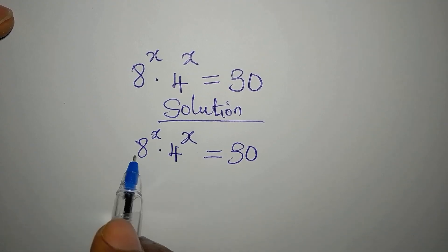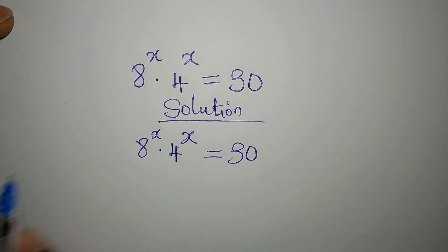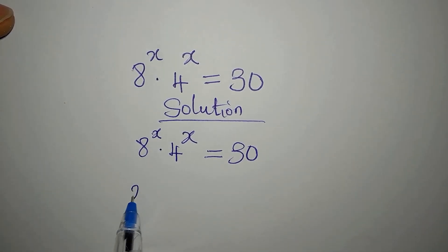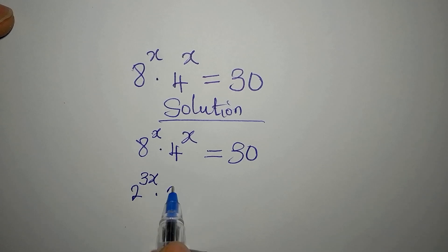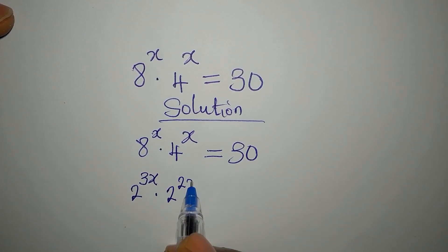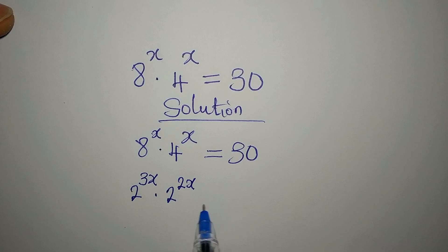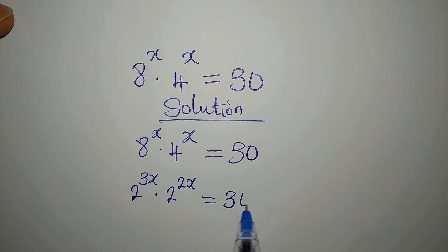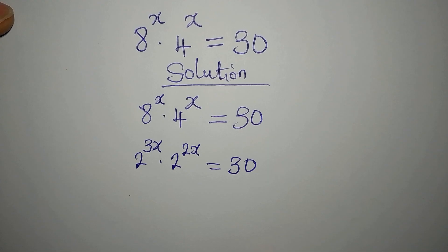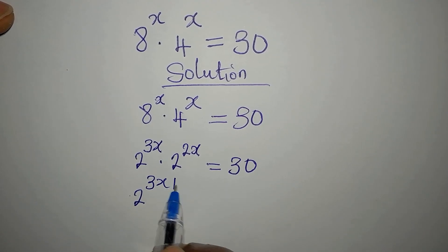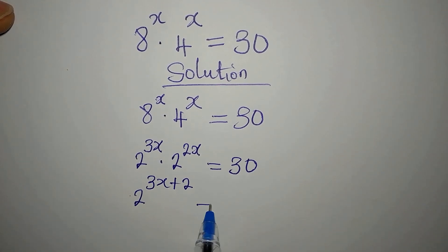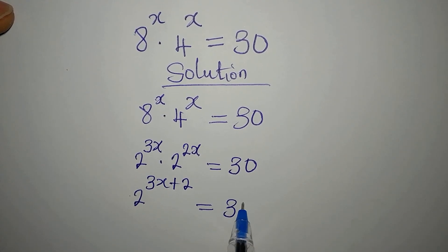From here we can decide to make all terms have the same base. 8 is the same as 2 to the power of 3, multiplied by x, then 4 is 2 squared, multiplied by x, and this is equal to 30. Since we have the same base, we can pick one base and add the powers, so we have 3x plus 2x, obeying one of the laws of indices, and this equals 30.